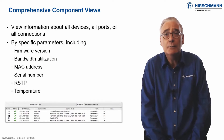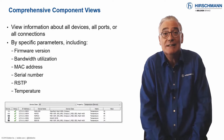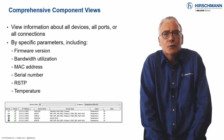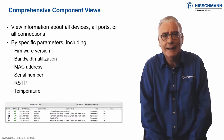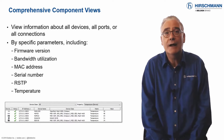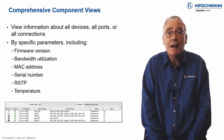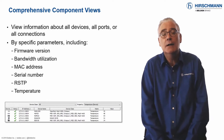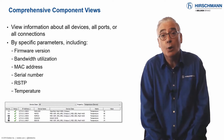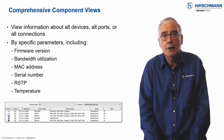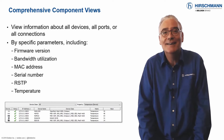But there will be times when you need more specific information, and typically you'll need it quickly. The properties section of Industrial HiVision provides you with information about specific properties of devices, connections, or ports — in real time.